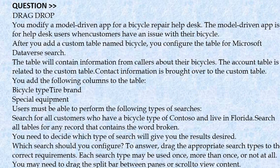After you add a custom table named Bicycle, you configure the table for Microsoft Dataverse search. The table will contain information from callers about their bicycle. The Account table is related to the custom table, and contact information is brought over to the custom table. You add the following columns to the table: Bicycle Type, Tire Brand, and Special Equipment.